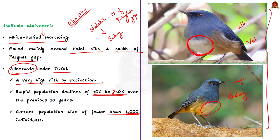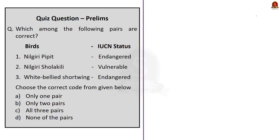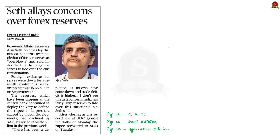That's all about this article. In this discussion, we saw about the Nilgiri Blue Robin — its physical characteristics, habitat, IUCN conservation status, and the difference between the Nilgiri Blue Robin and the White-Bellied Shortwing. With these key takeaway points, let's move on to the next article discussion.